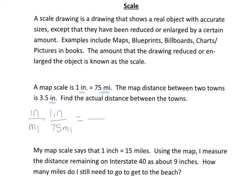So what we want to know is if they're 3.5 inches on the map, what's the actual distance? So we have 1 times d and 75 times 3.5. So 1d is equal to 262.5, which we would divide by 1 to find out that d is equal to 262.5 miles.